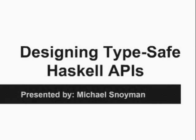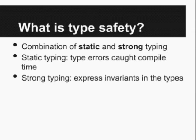The first question we're going to address is: what is type safety? If that's our focus, we have to understand exactly what it is that we're doing. Type safety is really built based off two different components: one is static typing and one is strong typing. These are two different concepts that end up getting confused quite often, so I want to define them clearly right now. Static typing means types are checked at compile time instead of at runtime, as opposed to strong typing, which is how much you're able to express your invariants via the type system.